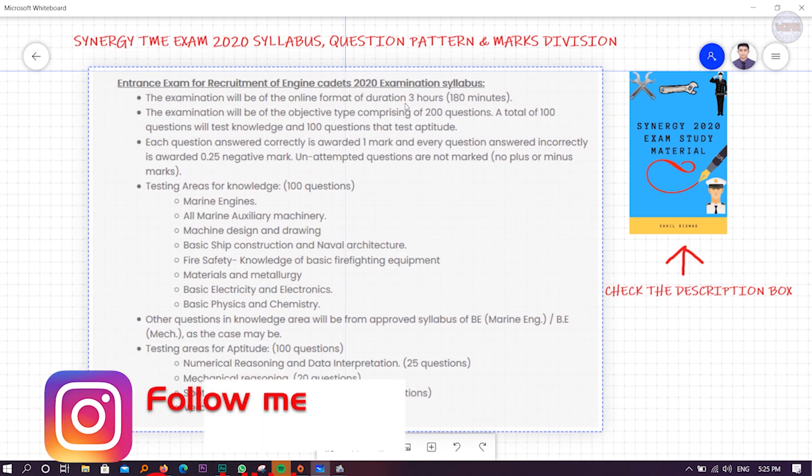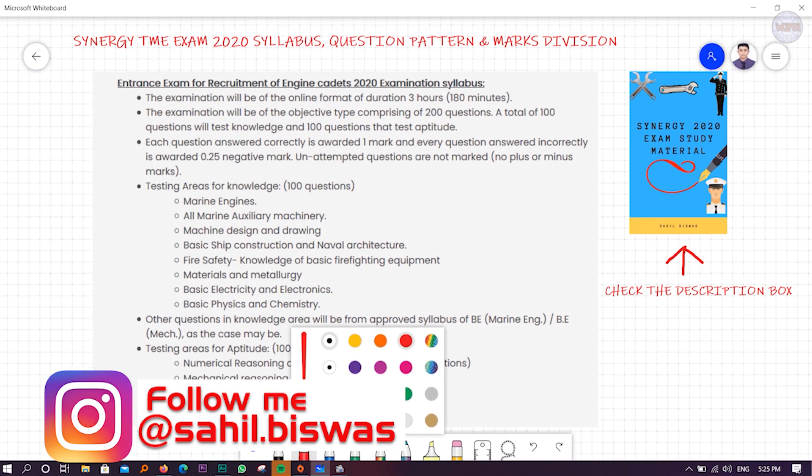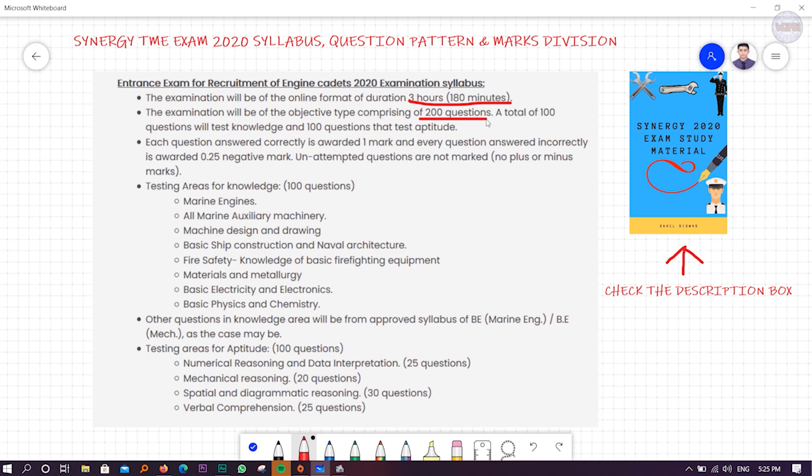As you know, it's a three hours examination - 180 minutes - and you have to answer 200 questions. A total of 100 questions will test your knowledge, and 100 questions will be aptitude. One mark is awarded for each question, and if you answer incorrectly, there will be 0.25 marks negative marking. For unattempted questions, there will be no plus or minus. If you are not 100% sure, you should not attempt the question.